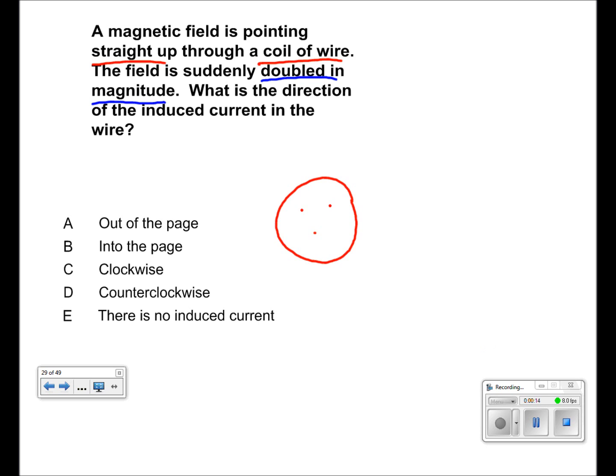And afterwards, the magnetic field is doubled in magnitude. So now we have more dots going out of the page.